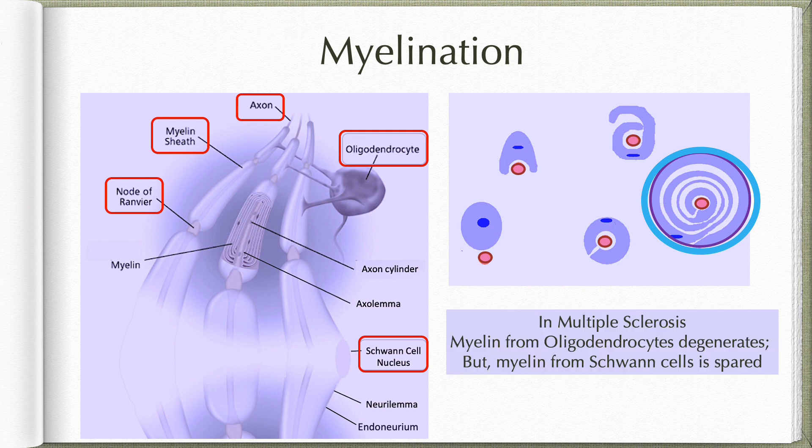In certain demyelinating diseases like multiple sclerosis, myelin from oligodendrocytes is found to be degenerating, but myelin from the Schwann cell is spared.